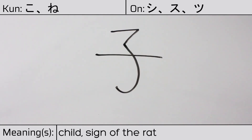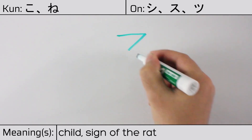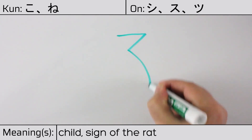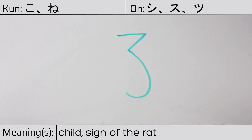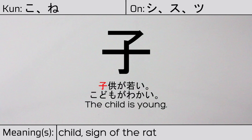This character is made up of the following radicals or parts: riou meaning completion, and the kanji ichi or wan. Our example sentence is: Kodomo ga wakai — The child is young.